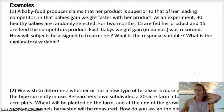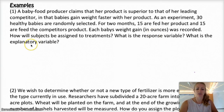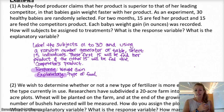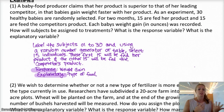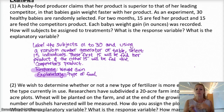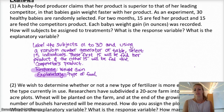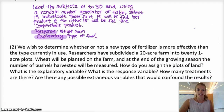Go ahead and read example one and try it on your own — recall that we talked about response variables and explanatory variables in a past video, so go back and refresh if needed. Here's how I wrote out the assignment: label the subjects one to 30, then using a random number generator or table, select 15 individuals. Those first 15 selected will be fed the test product and the other 15 will be fed the competitor's product, so everybody has the same chance of being in either group. The response variable is the weight gain of the child; the explanatory variable is the type of food they get.